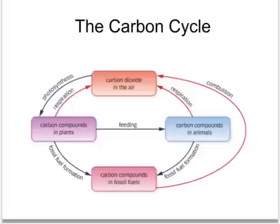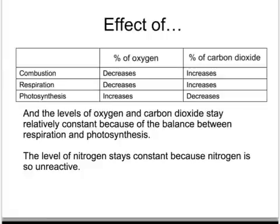It's because there's been so much combustion of fuels in the last two or three hundred years since the Industrial Revolution, and because of the industrialization of nations across the world, that the amount of carbon dioxide in the air is very slowly creeping up. When you're asked about the carbon cycle, you must talk about the percentage changes — how processes change the level of oxygen and carbon dioxide in the air.